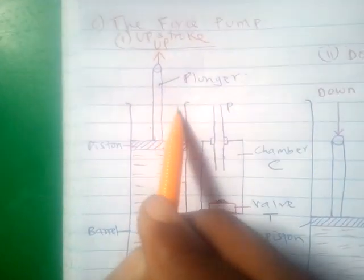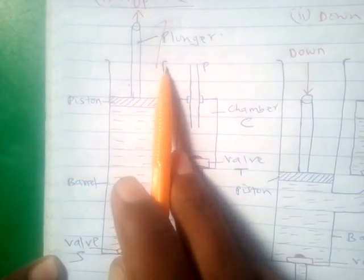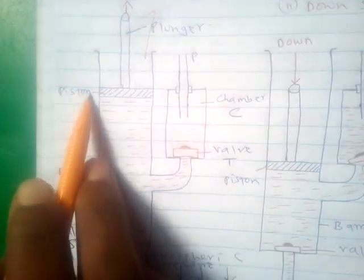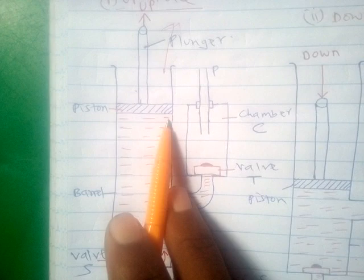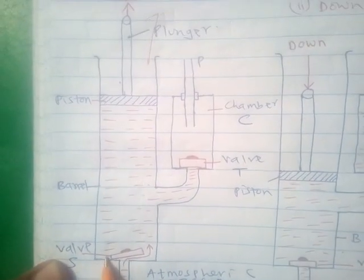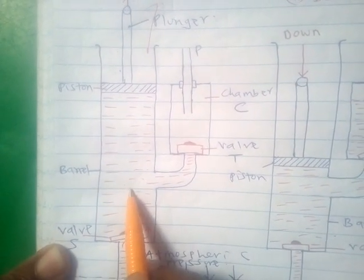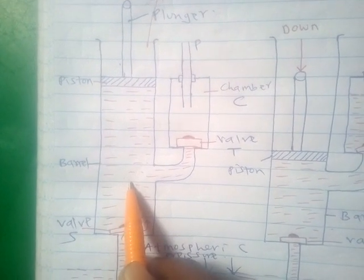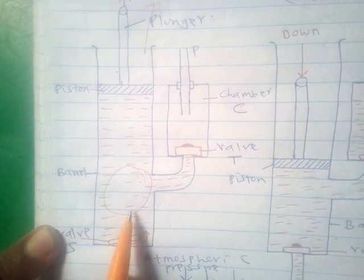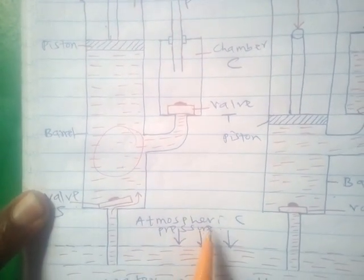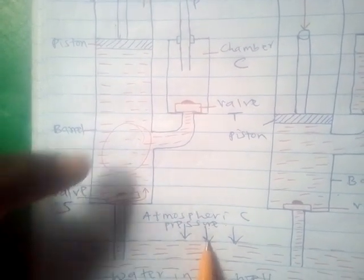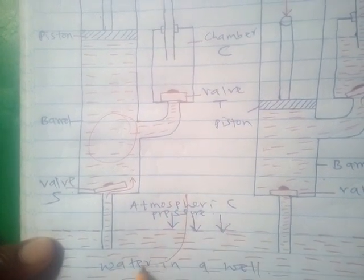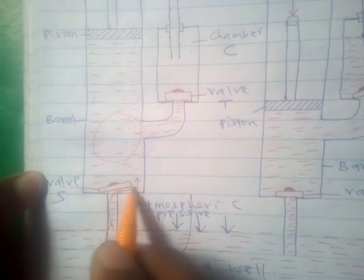During the upstroke of the force pump, the plunger is moved up. The air between valve S and the piston in the barrel increases in volume — the air between valve S and the piston expands, and its pressure reduces. Because the pressure of the air above valve S has reduced below atmospheric pressure, the atmospheric pressure acting on the water in the well is now greater, so it forces valve S to open and water is pushed into the barrel.